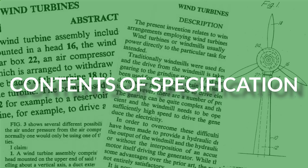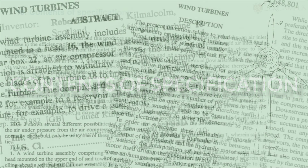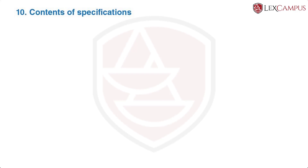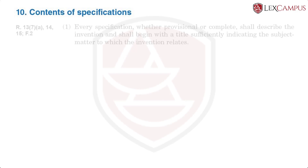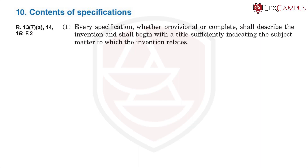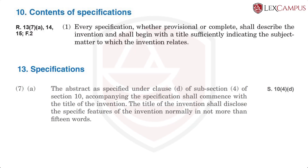Section 10 deals with the contents of the specification — what should a specification contain. Section 10 says that there has to be a description and a title. In Rule 13, the extent of the title is mentioned: what form it should be in and what the limitations of a title are.